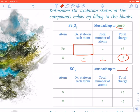Since this needs to add up to zero, iron must contribute a total charge of positive 6. Looking back at our formula, there are 2 iron atoms, which goes right here. So what times 2 will give us positive 6? You should have come up with 3.